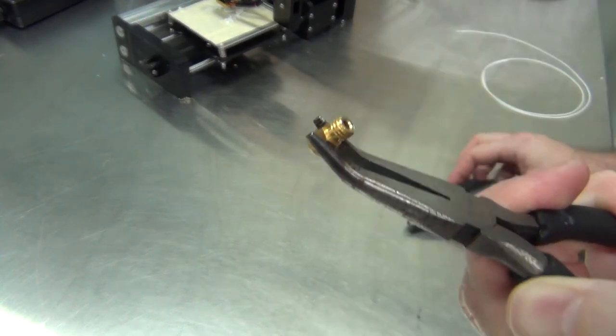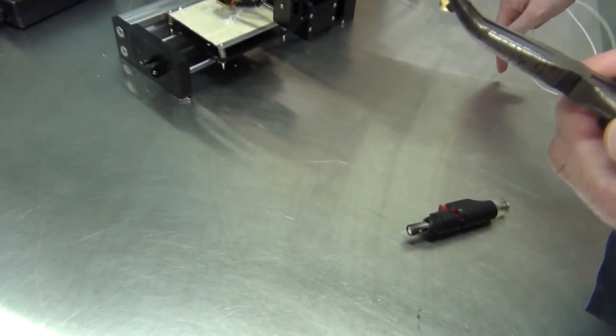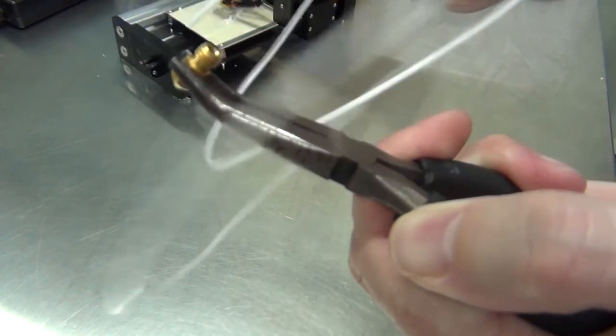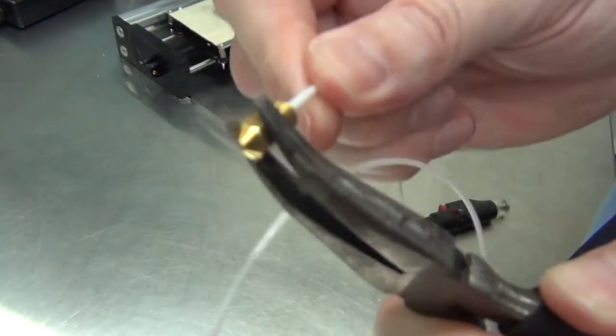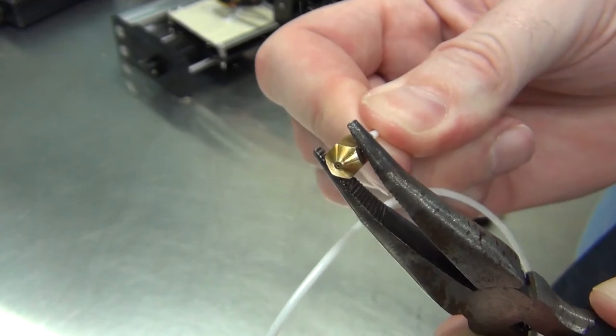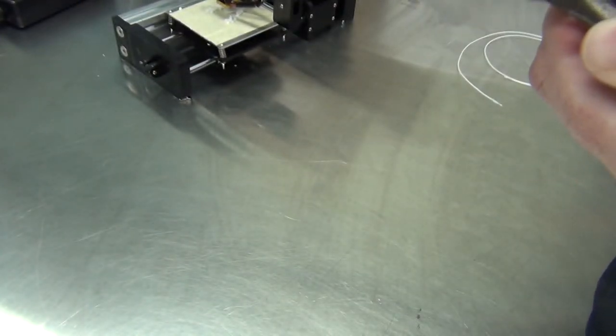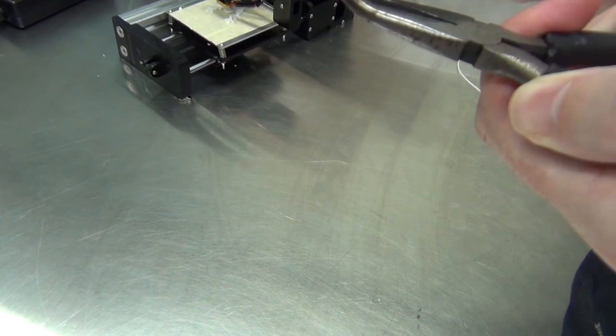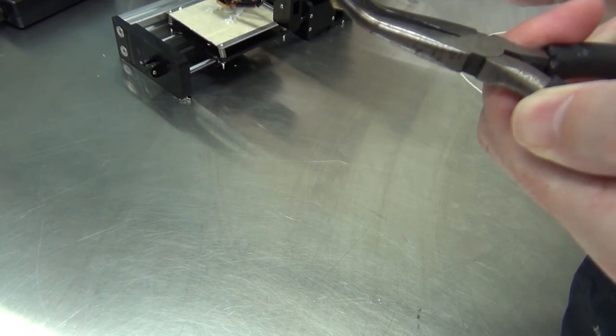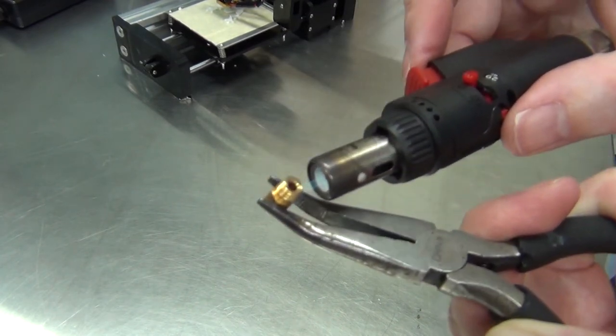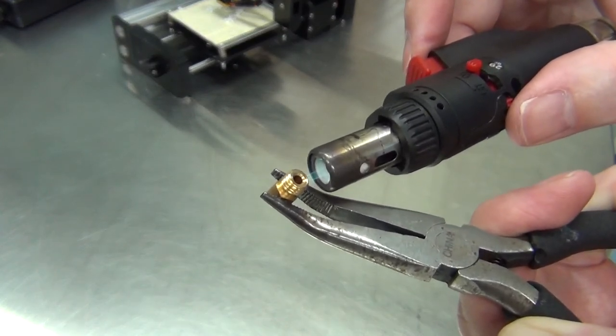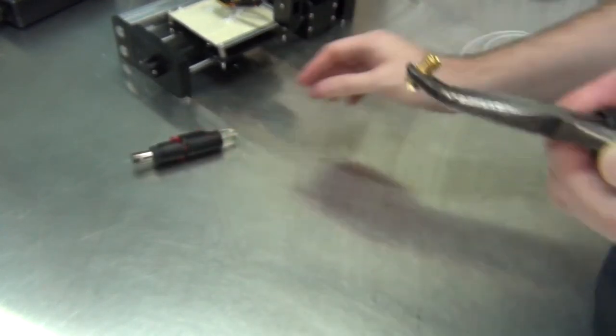And we can test this by heating up the nozzle again and trying to push the filament through. You might find it'll take a couple of passes to get the temperature right for the filament. If it's too hot it'll just be too squishy and if it's too cold you might not be able to pull it out at all.